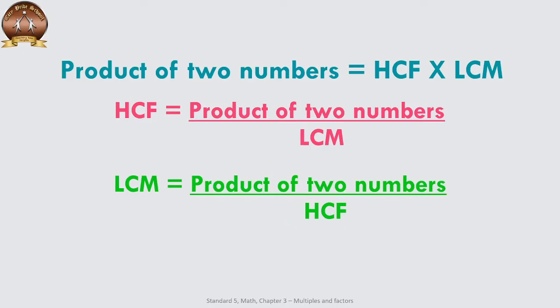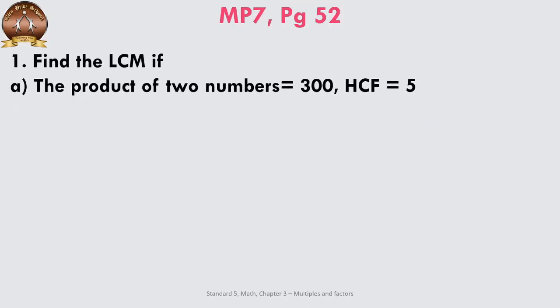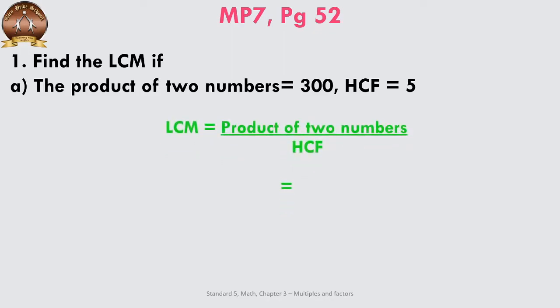We are going to look at a few examples which will make this clearer. Find the LCM if the product of the two numbers is equal to 300 and the HCF is 5. The formula we use here is: LCM is equal to the product of two numbers divided by the HCF.